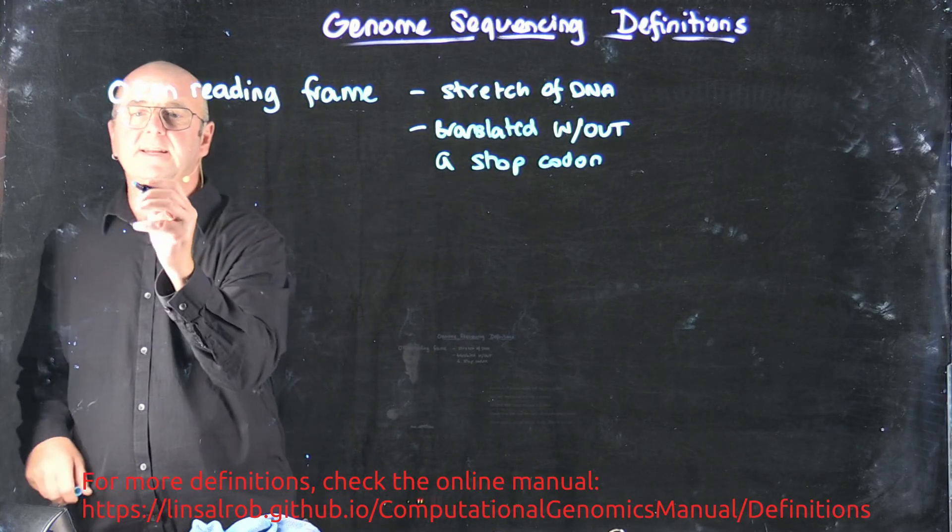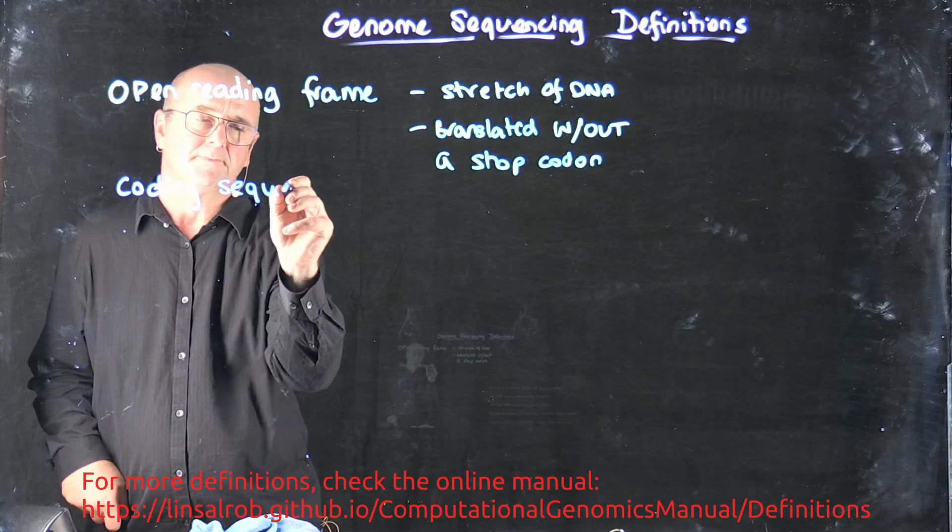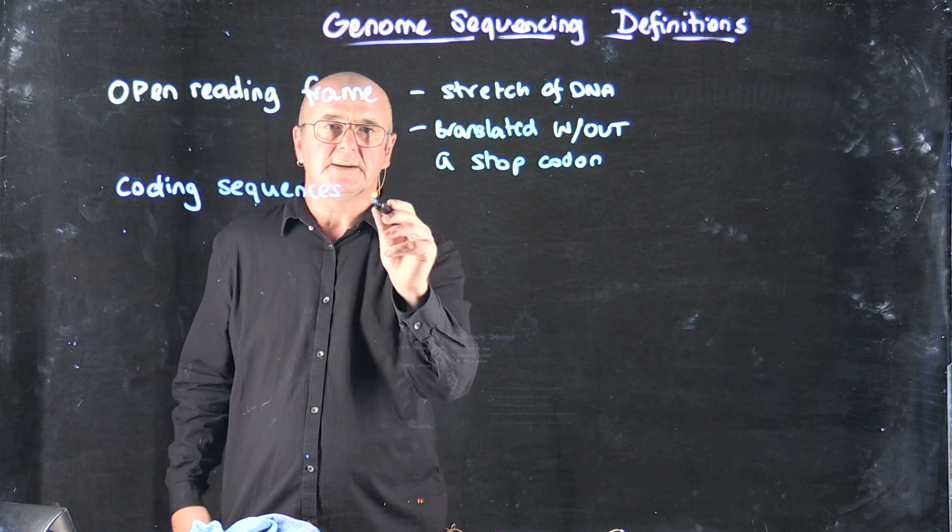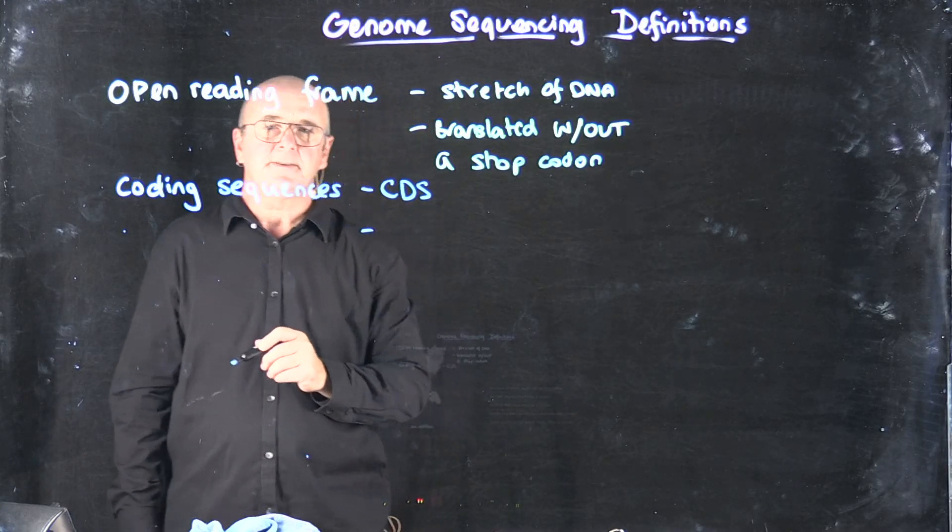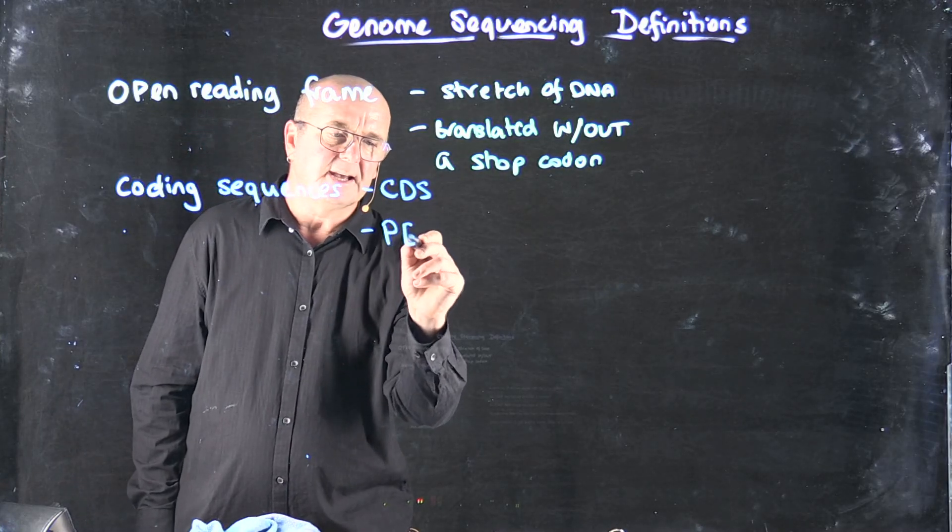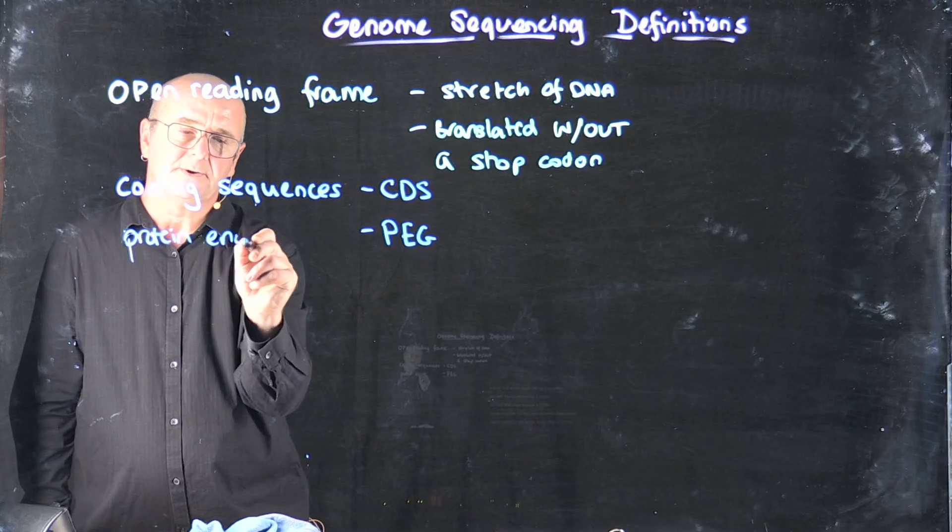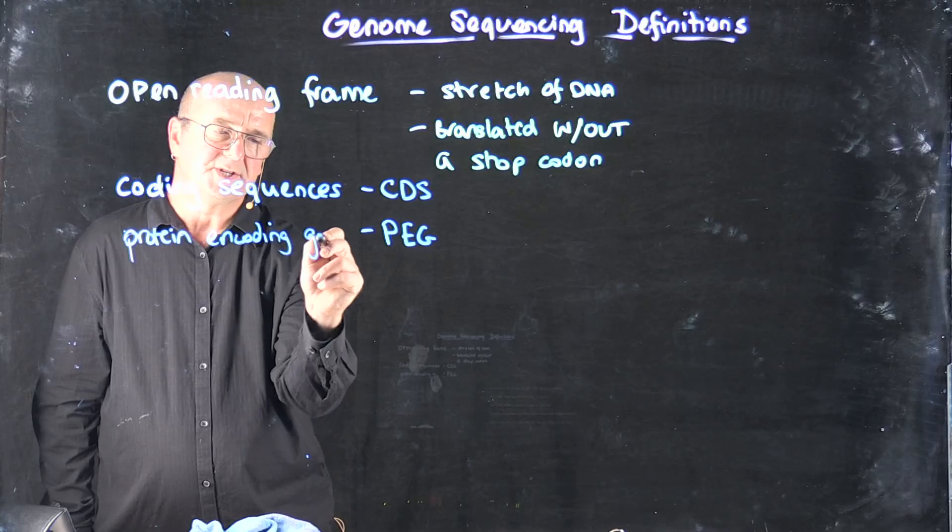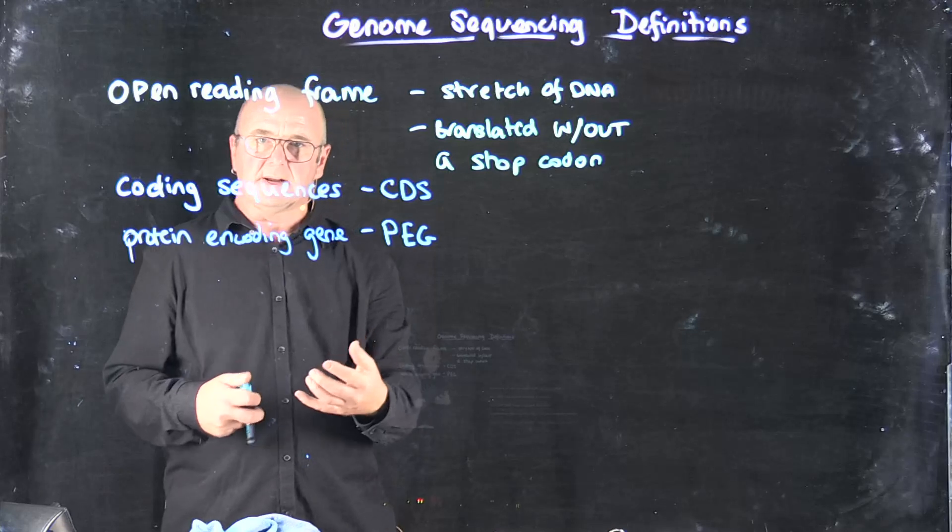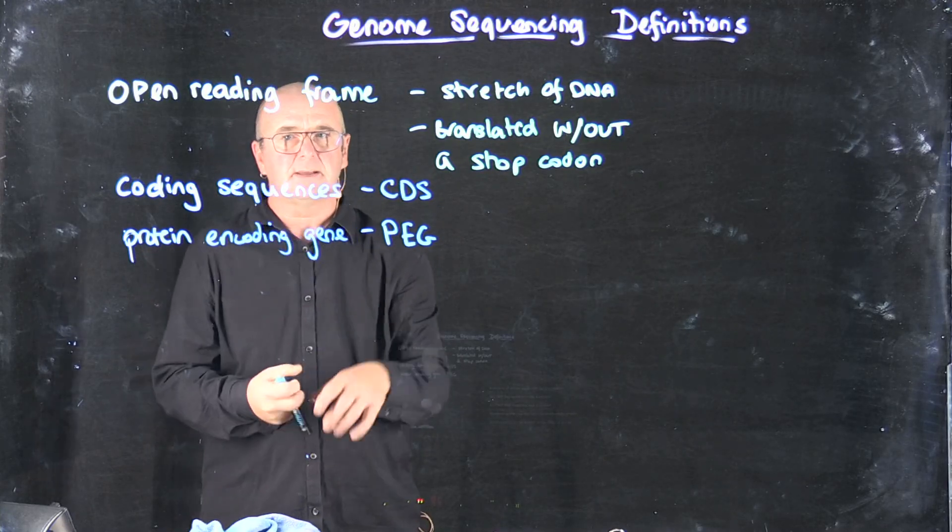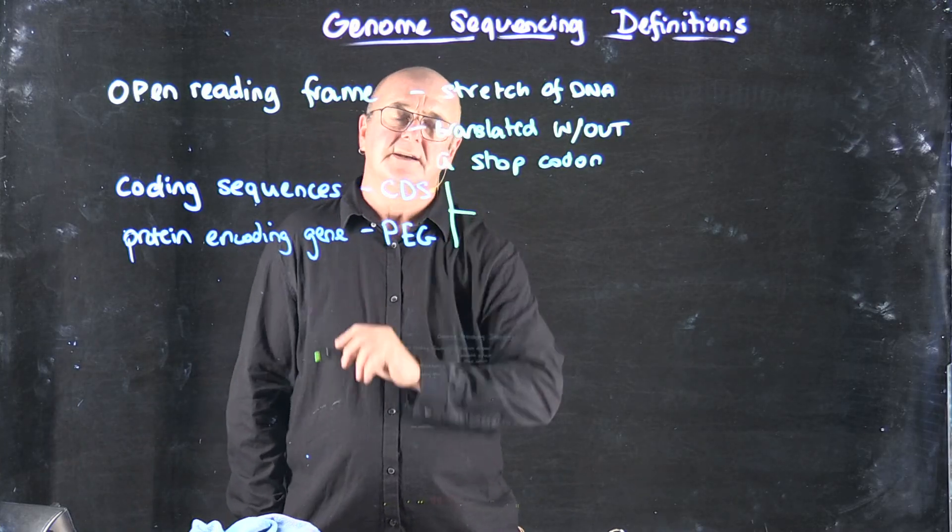Once we've got an open reading frame, we can identify coding sequences that are sometimes called CDS, and a more specific version of CDS is the PEG or protein encoding gene. A coding sequence could be an RNA or a tRNA, but a protein encoding gene specifically means that it encodes proteins and not RNAs or tRNAs.